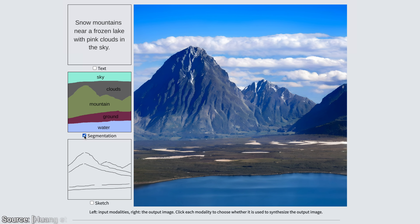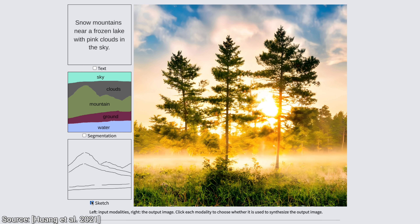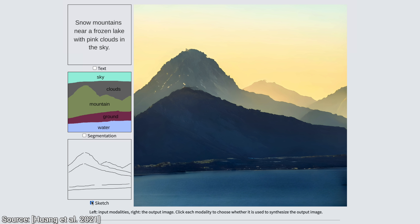Or, we can tell the AI where things are by sketching. This one also works, but this has been done too. So, is there nothing new in this paper?